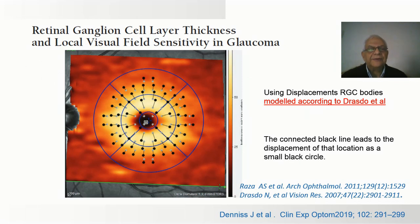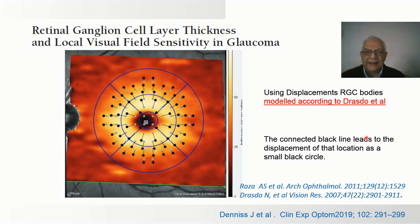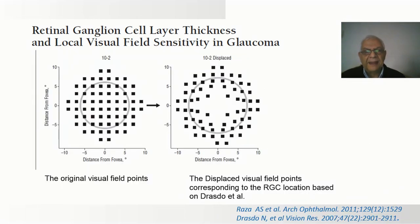When these authors studied the relation between the ganglion cell layer thickness and the visual field, they used a displacement model of the retinal ganglion cell bodies suggested by Drasdou et al. The connected lines show the amount of displacement — the actual location of the receptors versus where the ganglion cells are located away, because Henle's layer distributes the ganglion cells away from the central part. They made such adjustment; this is the 10-degree visual field without the adjustment, and when they apply it, the locations shift accordingly.